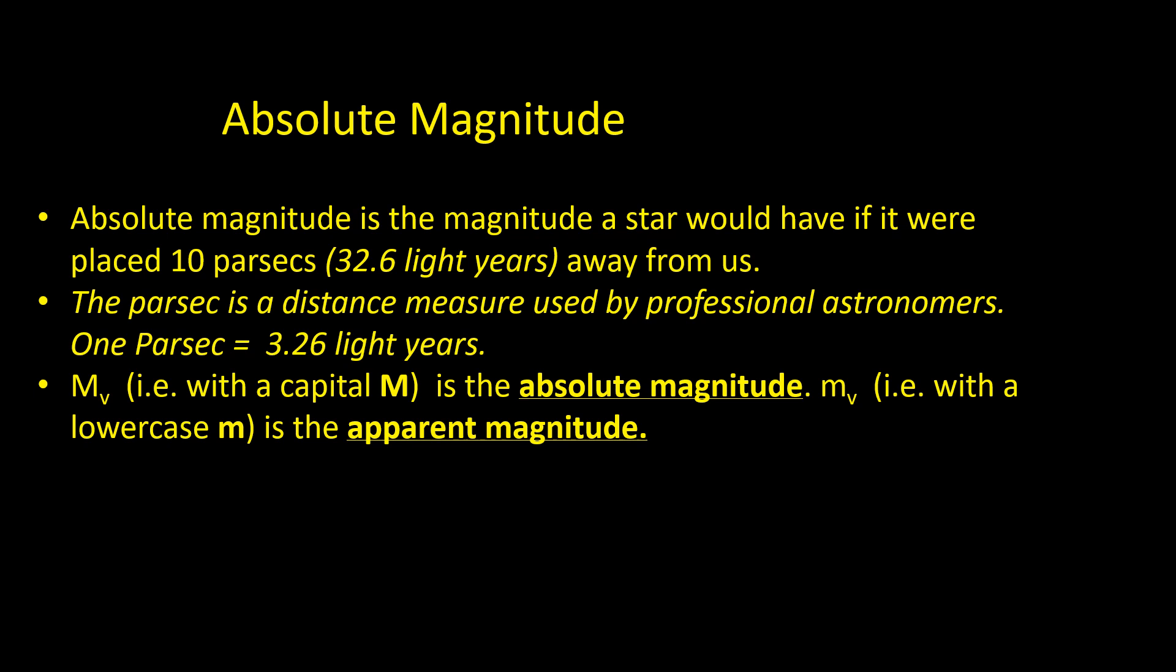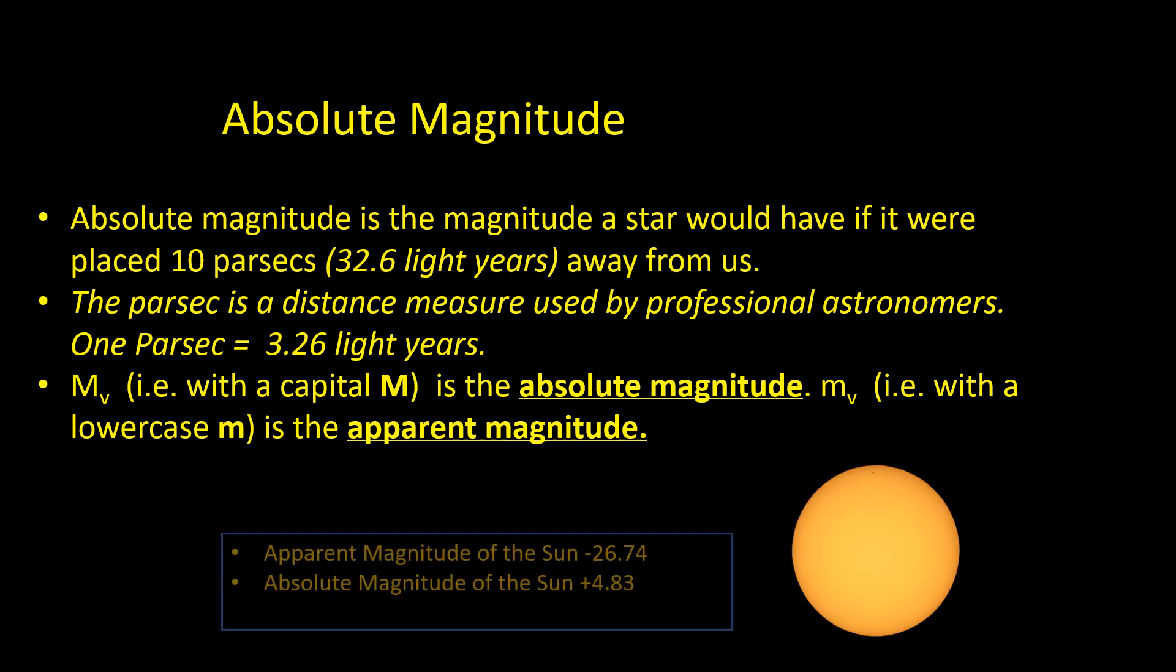The magnitude we observe on Earth became known as the apparent magnitude. For example, the sun which has an apparent magnitude of minus 26.74 has an absolute magnitude of only 4.83. It is only very bright because it is close to us and, if it were 10 parsecs away, it would be an insignificant star.